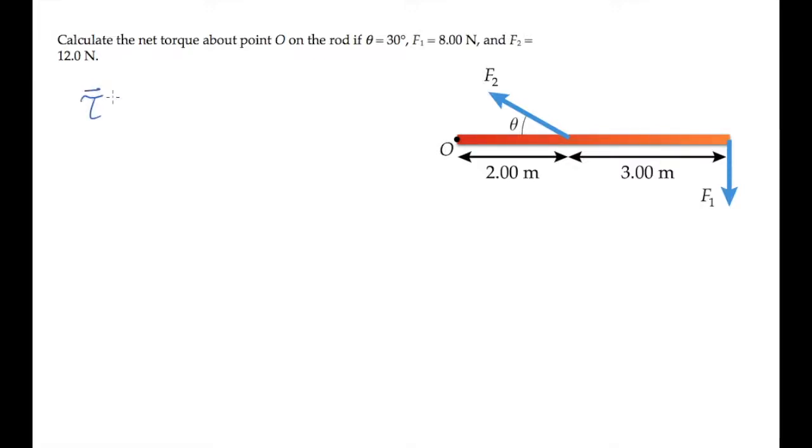The torque due to force F is the vector R cross F, where R is the vector from the pivot, O in this case, to the point where the force is applied. This vector has a magnitude R F sine phi, where phi is the angle between the R and F vectors, and it has a direction given by the right-hand rule.